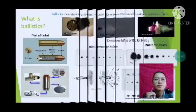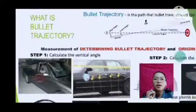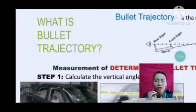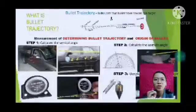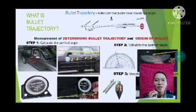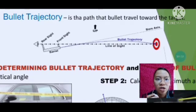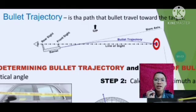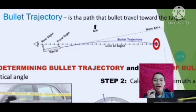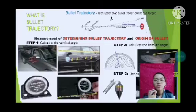What is bullet trajectory? Bullet trajectory is the path that a bullet travels toward the target. In the example shown, you can see the blue line — that is the bullet trajectory. The muzzle cannot go straight to the target because the bullet's direction is upward first; it cannot simply be straight. That is bullet trajectory.